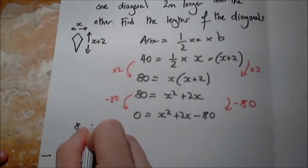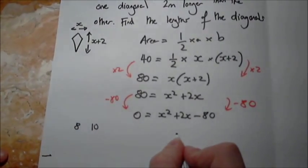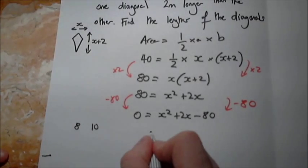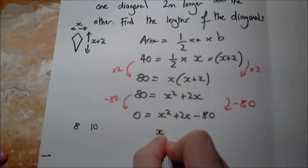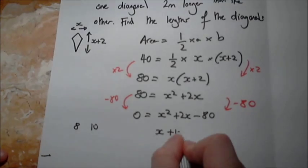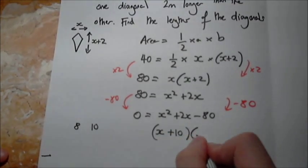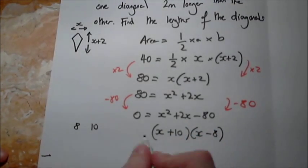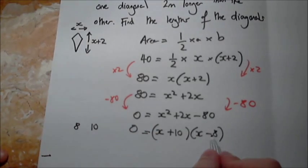Let's try eight and 10. How about if we try x plus 10, x minus eight? Let's check. 10 times minus eight is minus 80, 10 minus eight is plus two. Done it. Sorted.